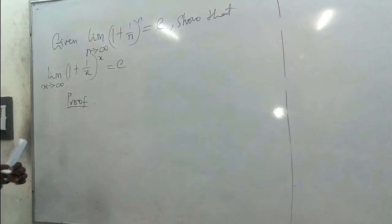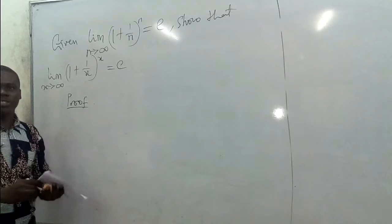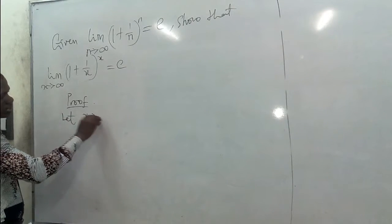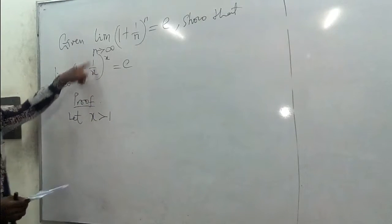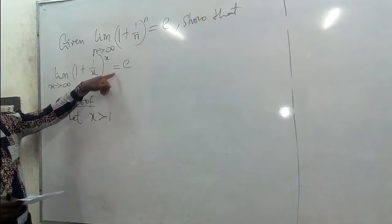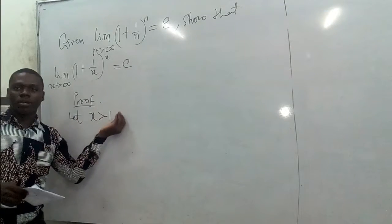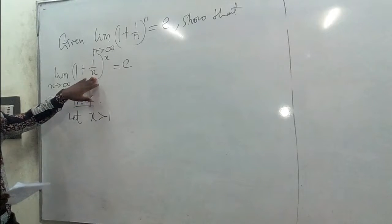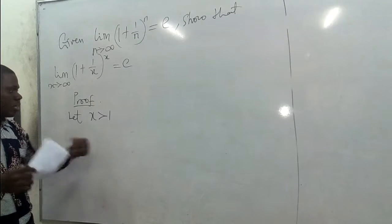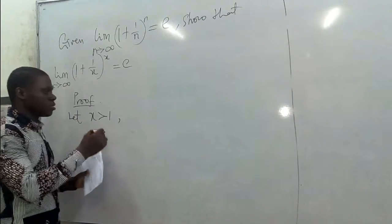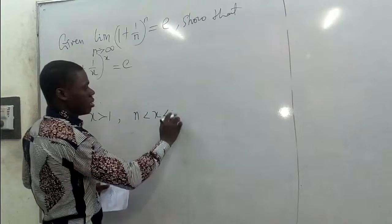So the first condition we want to impose is that x is a real number, but we want to suppose that x is greater than 1. If x equals 1, this place would give us 1, so we'd be having 2 to the power x, and that will not lead us to e. So the condition that x is greater than 1 also prevents us from thinking of negative x. If x is greater than 1, we are looking at the smallest domain that x can be. So we realize that we can have n less than x less than n plus 1.